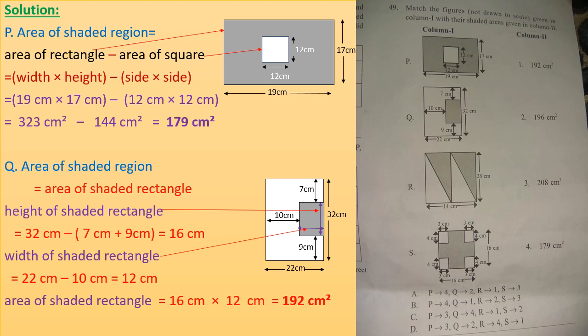Area of shaded rectangle is width into height: 16 cm into 12 cm equals 192 cm square. So option Q is matched with option 1 in column 2.